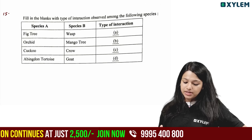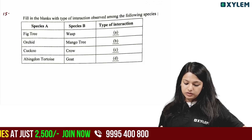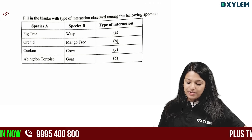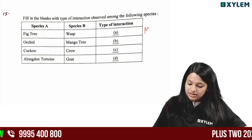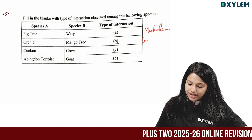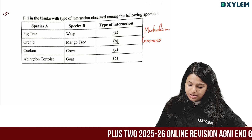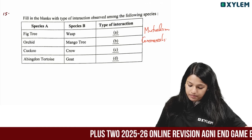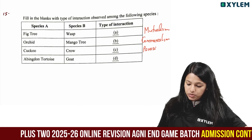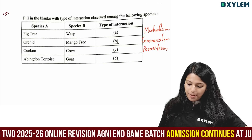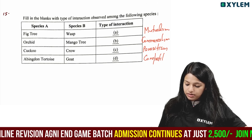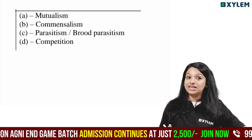Fill in the blank with the type of interaction observed among the following species. Fig tree and wasp — mutualism. Orchid on mango tree — commensalism. Cuckoo and crow — brood parasitism. Abingdon tortoise and goat — competition.